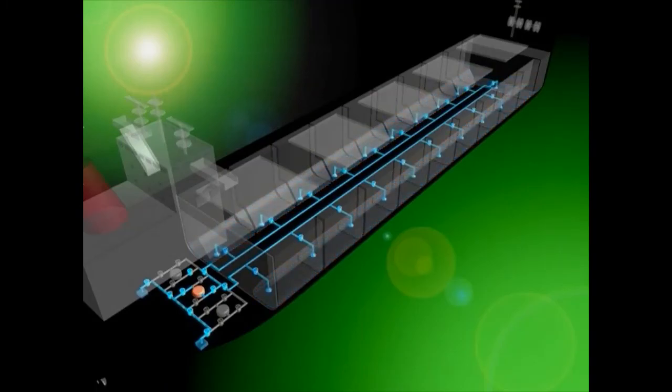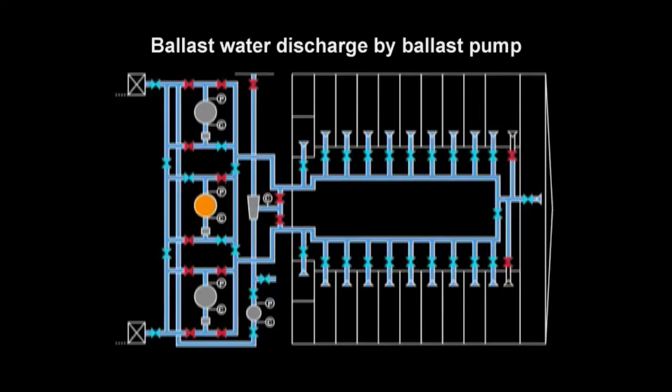When ballast water discharge for all tanks has been completed, stop the pumps by closing the ballast pump discharge valves. Then close the tank's suction valves, completing the steps for discharge by ballast pump.